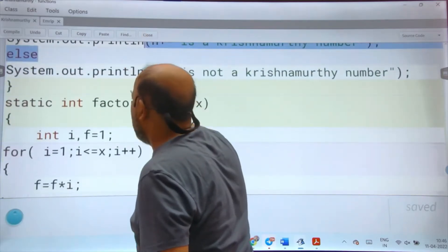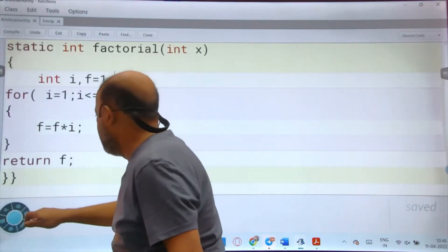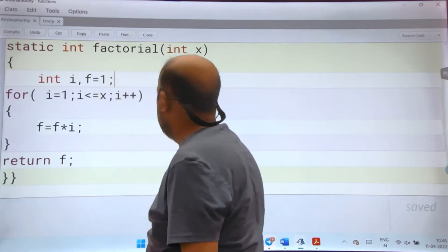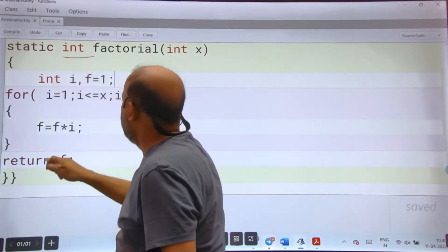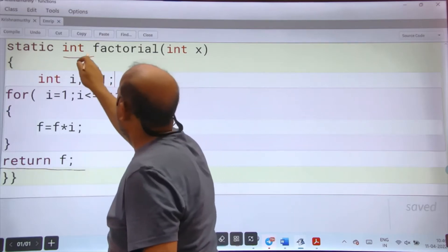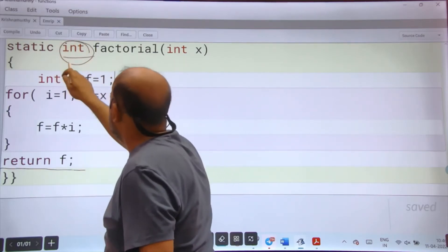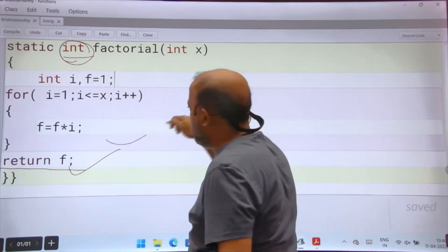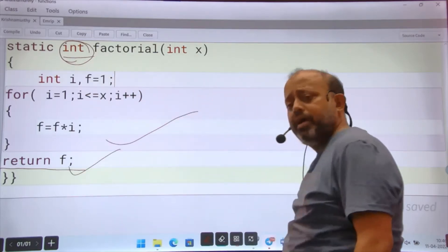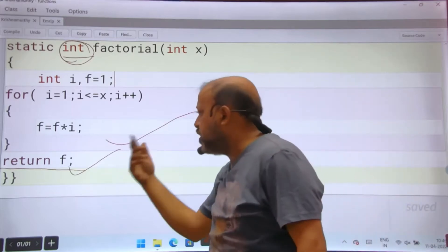From last day, if you remember it was void and here we were printing. Now since we are returning integer, it should be int, and here return f. What is f? Factorial. I hope last day you understood factorial - we were printing it, now we are returning it.